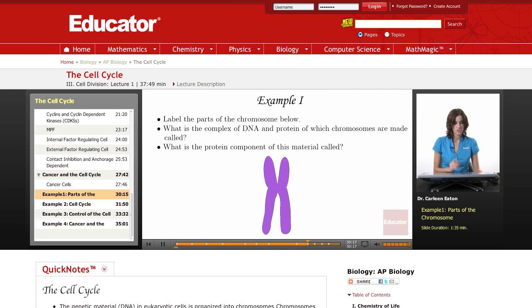All right, let's do a few examples to reinforce what we've just learned. First of all, example one: label the parts of the chromosome below. What is the complex of DNA and protein of which chromosomes are made called? What is the protein component of this material called?